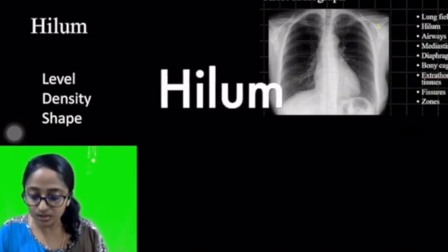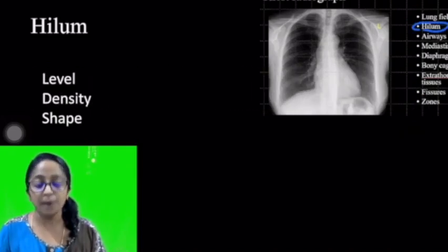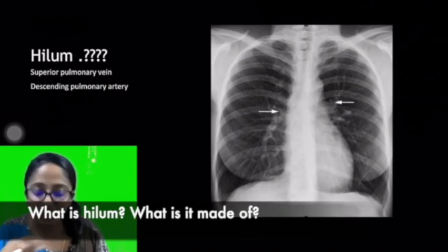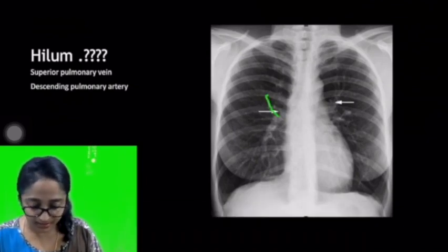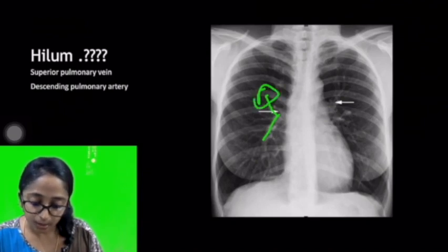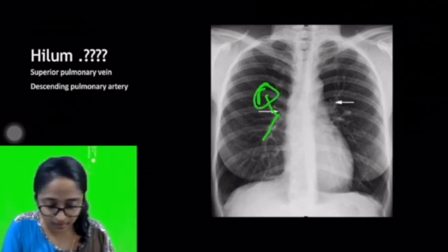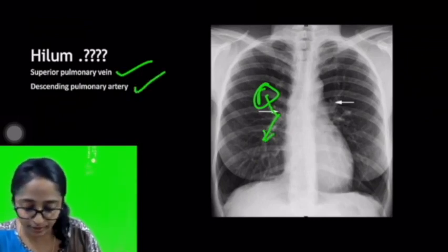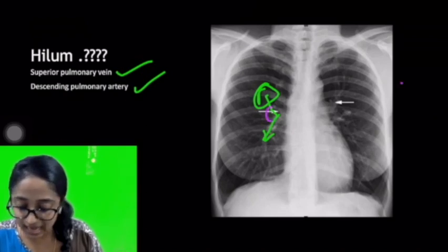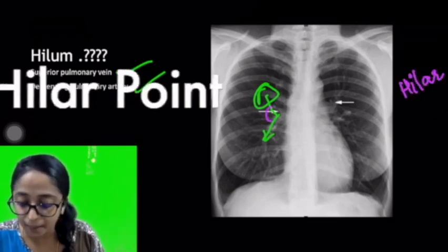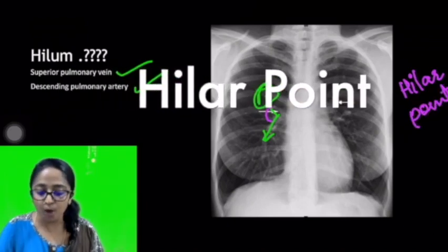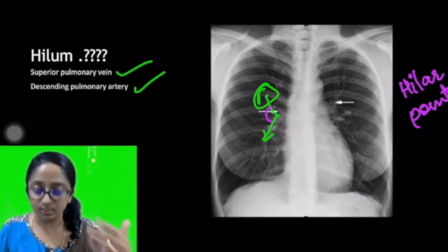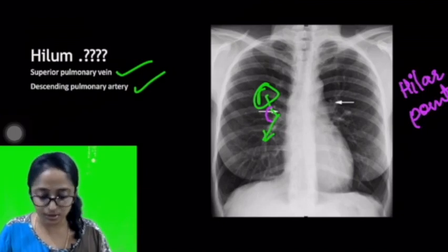Now we'll move over to the hilum. In the hilum, we'll be discussing the level, the density, and the shape. First and foremost, what is the hilum made of? The upper line represents the superior pulmonary vein and the lower one represents the descending pulmonary artery. These two join and form an acute angle — this junction is called the hilar point. So, the hilum is formed by the junction of these two vessels anatomically, and that is what you look for in the radiological image of the chest.